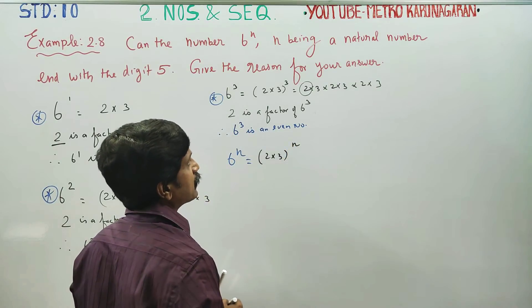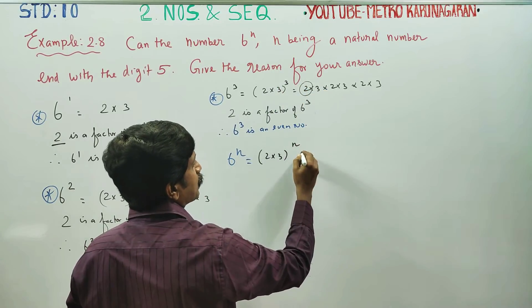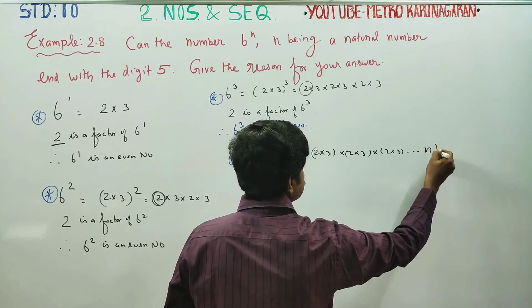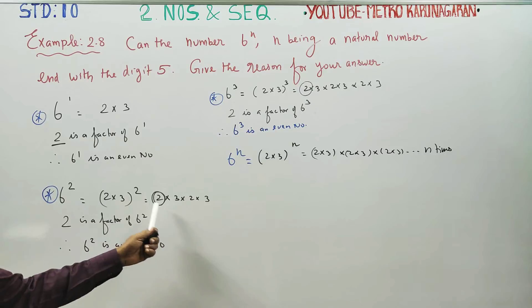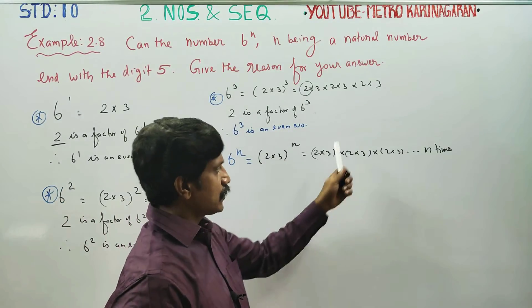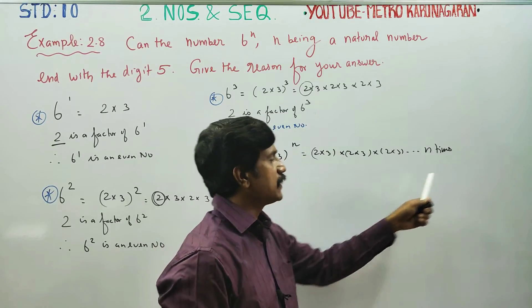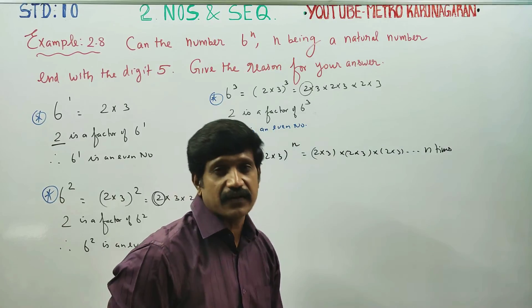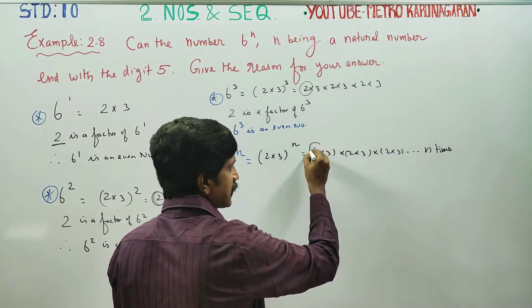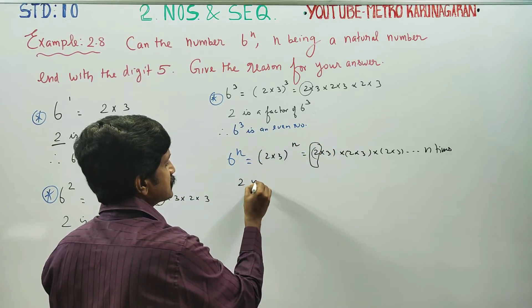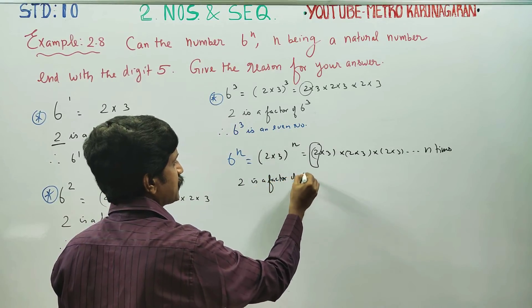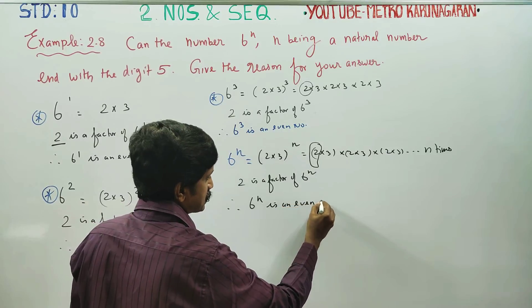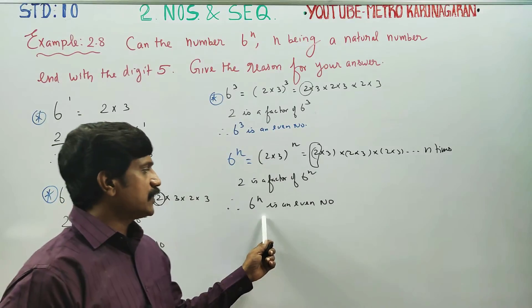2 into 3 whole power N. For any natural number N, 2 is a factor of 6 power N. Therefore, 6 power N is an even number.